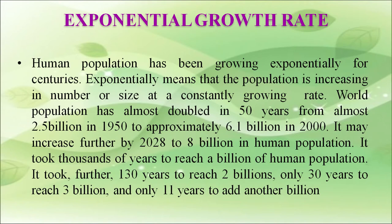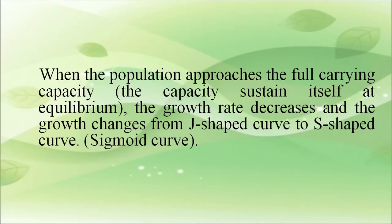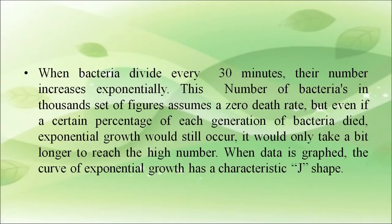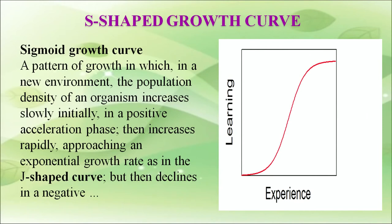It may further increase to 8 billion by 2018. When the population approaches the field carrying capacity, the growth rate decreases and the growth changes from a J-shaped curve to an S-shaped curve. The J-curve represents exponential growth — when bacteria divide every 30 minutes, their number increases exponentially, and even with a certain percentage dying, exponential growth would still occur. When data is graphed, the curve of exponential growth is J-shaped. The sigmoid growth curve shows that population density of an organism initially increases slowly in a positive acceleration phase, then increases rapidly approaching an exponential growth rate, before declining in a negative acceleration phase.